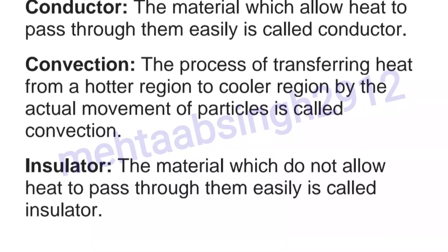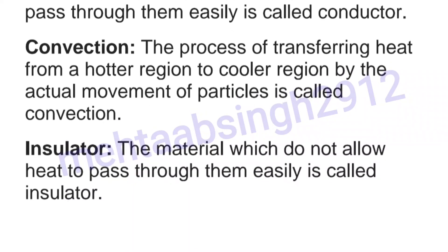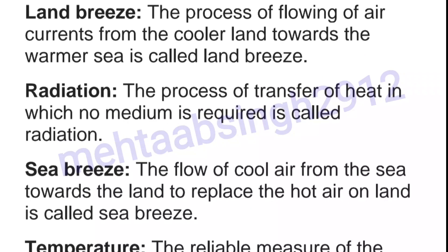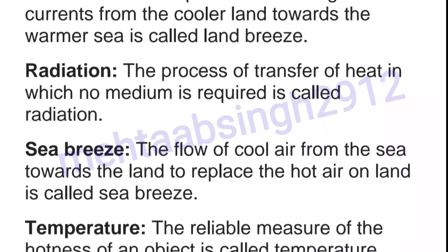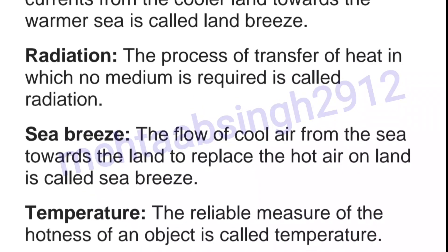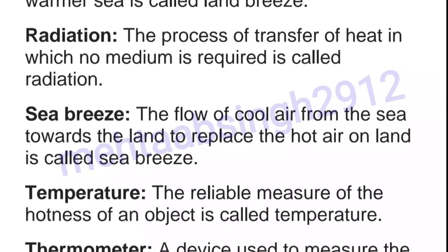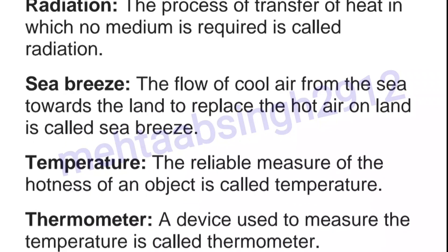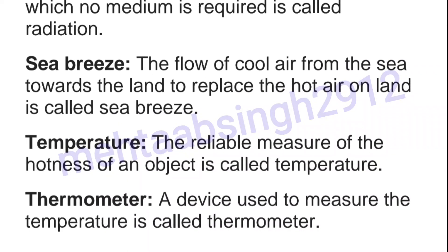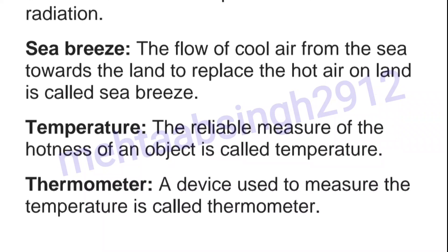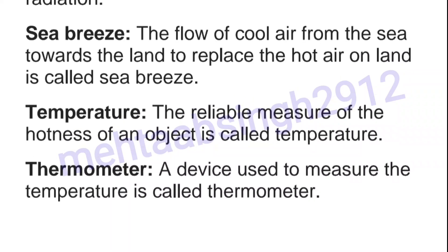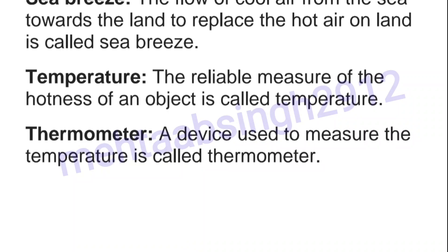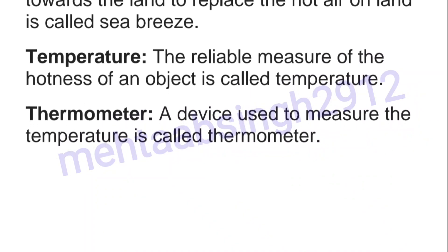Insulator: the material which does not allow heat to pass through it easily is called an insulator. Land breeze: the flow of air currents from the cooler land towards the warmer sea is called land breeze. Radiation: the process of transfer of heat in which no medium is required is called radiation. Sea breeze: the flow of cool air from the sea towards the land to replace the hot air on land is called sea breeze. Temperature: the reliable measure of the hotness of an object is called temperature. Thermometer: a device used to measure temperature is called a thermometer.